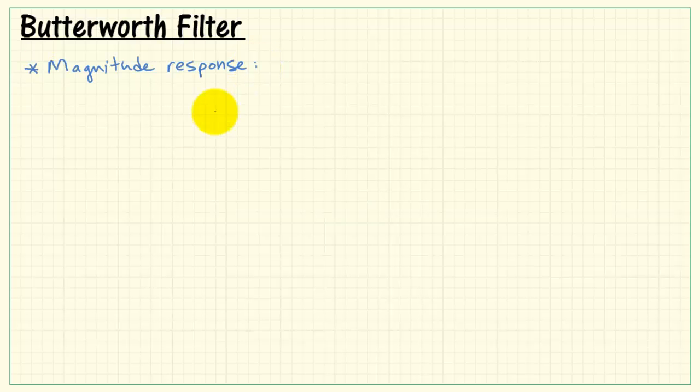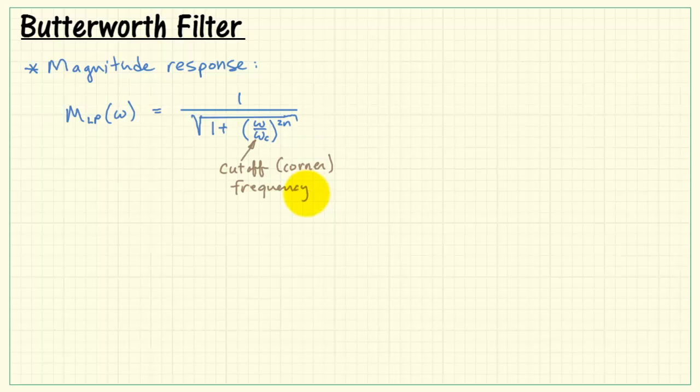Let's begin with the basic equation for the magnitude response. This is M for magnitude, sub LP for low-pass, and it's a function of frequency omega. It has this characteristic form: 1 over radical 1 plus frequency divided by the cutoff frequency, also known as corner frequency, that's omega c, and then n is the filter order.